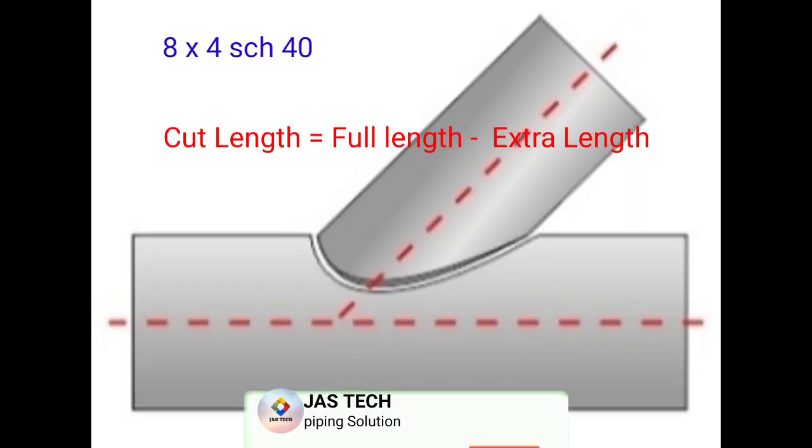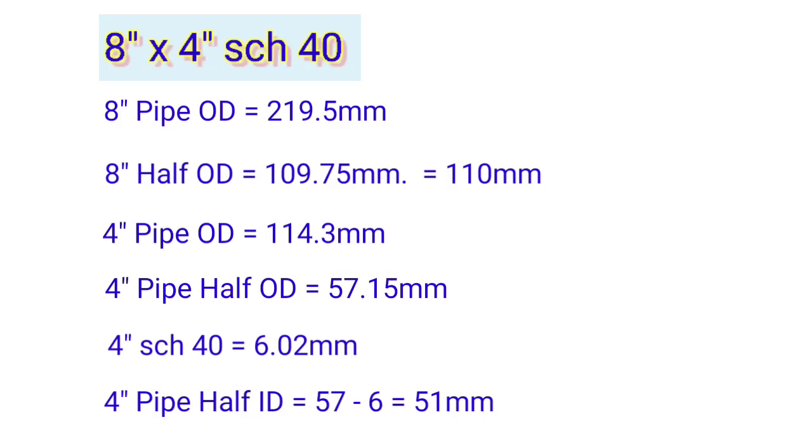Cut length formula: full length minus extra length. 8 inch pipe OD equals 219.5mm. We know this standard value.